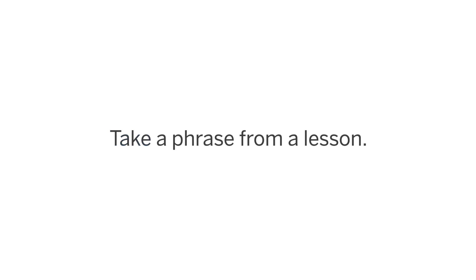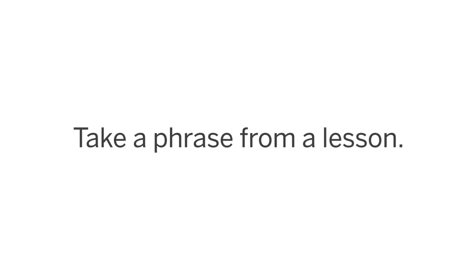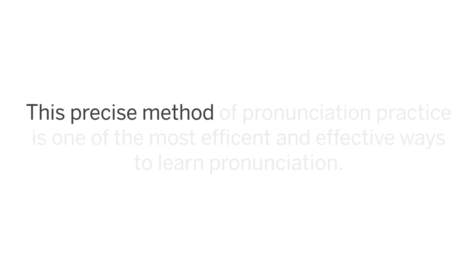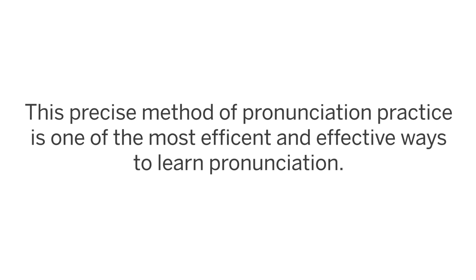Once you get the letters down, start listening to native audio and compare your pronunciation to the native speakers. Our language learning program's playback feature is a great way to accomplish this. Take a phrase from a lesson and start by practicing the individual words, playing the audio back at a slower speed and then again at a regular speed. After comparing your speech to the audio, combine the words to make complete phrases, imitating the intonation of the native speakers. This precise method of pronunciation practice is one of the most efficient and effective ways to learn pronunciation.